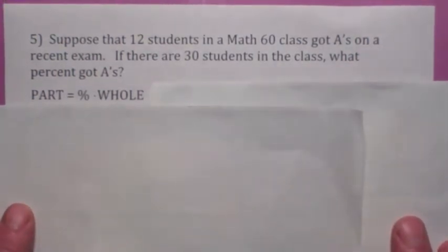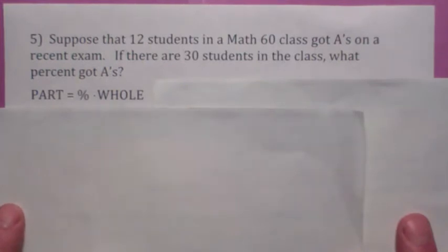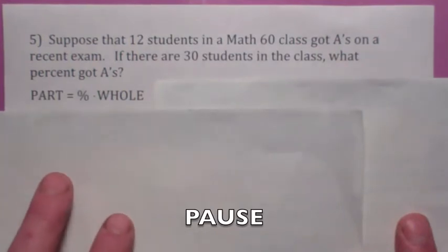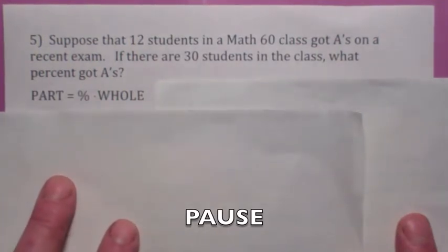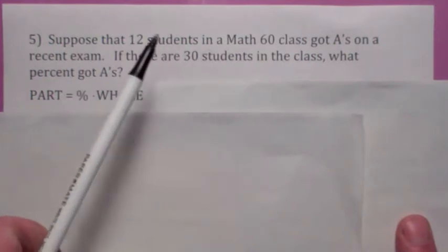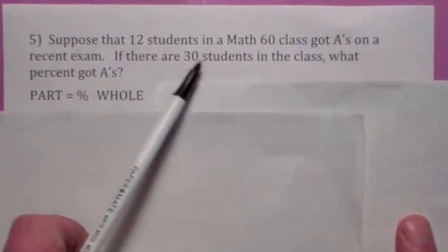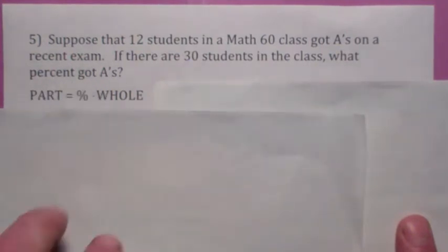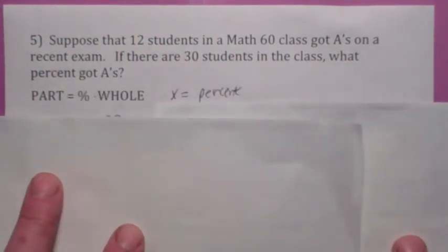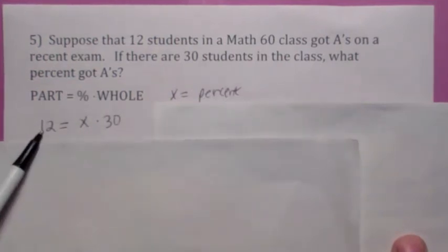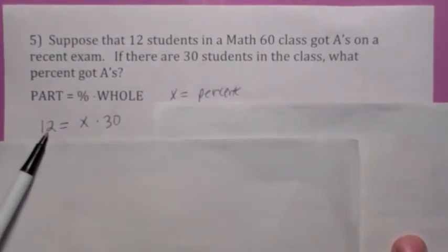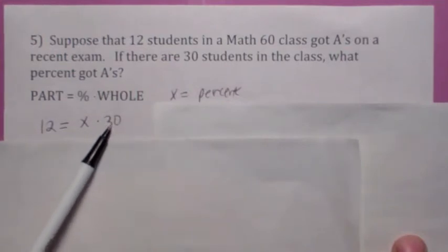Read this first one very carefully. Decide what the part, what the percentage, and what the whole is. Which one's the variable. Write the equation, and then solve the equation and answer in words. Go ahead and hit the pause button. Now, if you read this carefully, think about it. 12 students get A's out of 30. 30 is the whole. 12 is the part. The question asks what percent? So the unknown is going to be the percent. So the part would be the 12 students that got A's. 12 students is a percentage of the whole, right? The whole's 30.